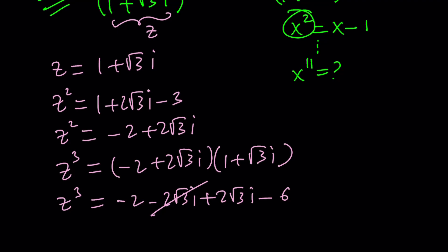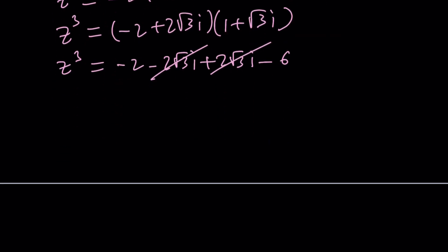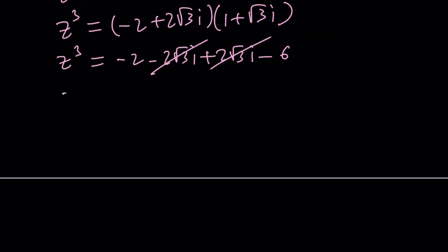Negative root three I and negative two root three I and positive two root three I, they're going to cancel out, leaving us with a real number, negative eight. So Z cubed is negative eight, but doesn't this mean that Z is negative two? No. Negative two is one of the cube roots of negative eight. We're actually looking at another cube root of negative eight.